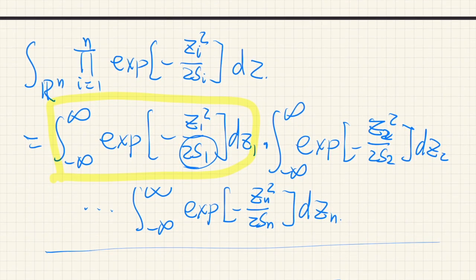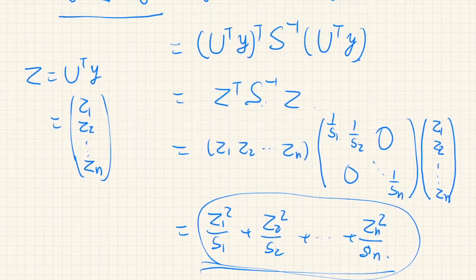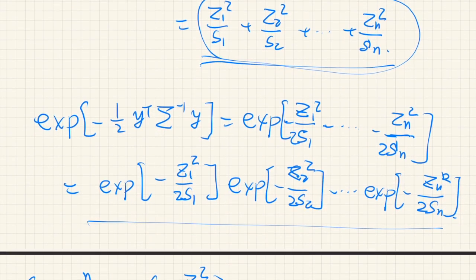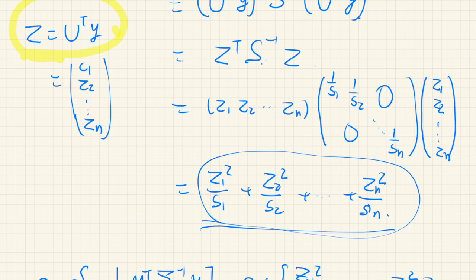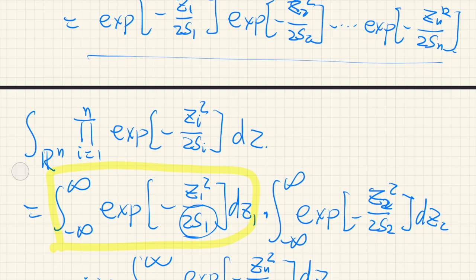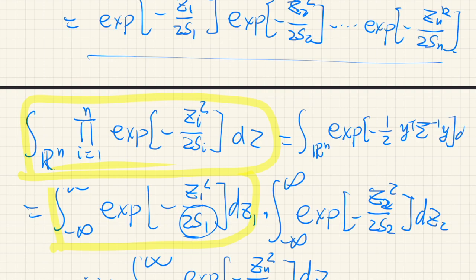Wait — since we changed variables from Y to Z via Z = U^T Y, we should also be concerned about the Jacobian of this transformation. However, since the determinant of U is 1, the Jacobian is just 1, so dZ equals 1 times dY. Therefore this integral over Z is indeed the same as the integral over Y.